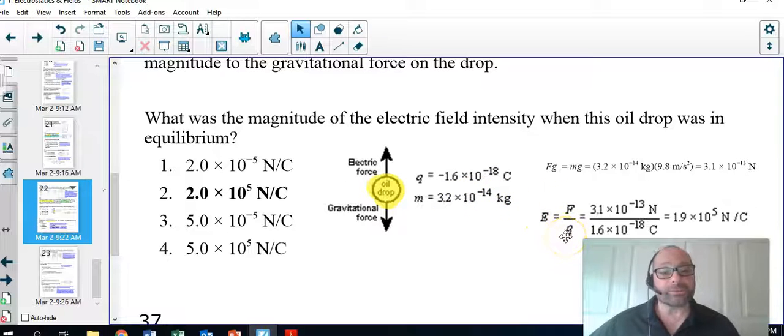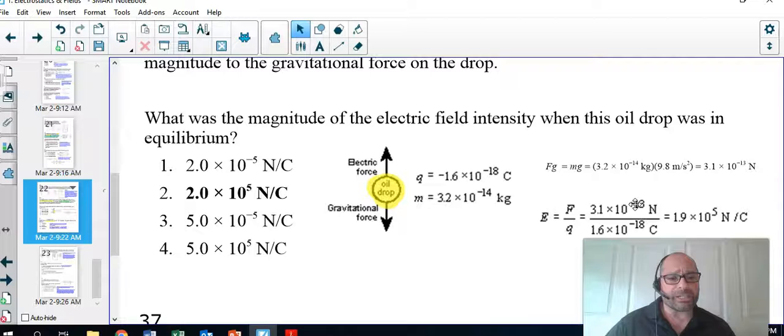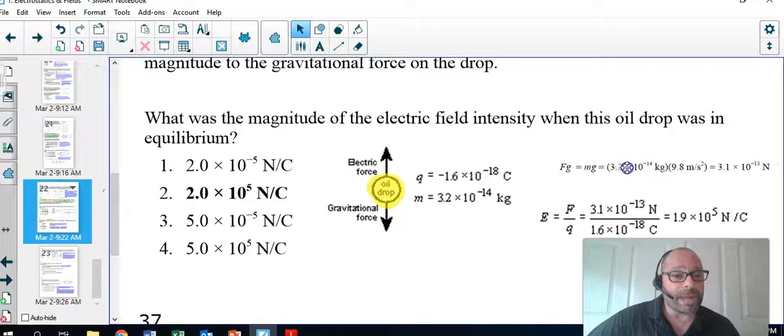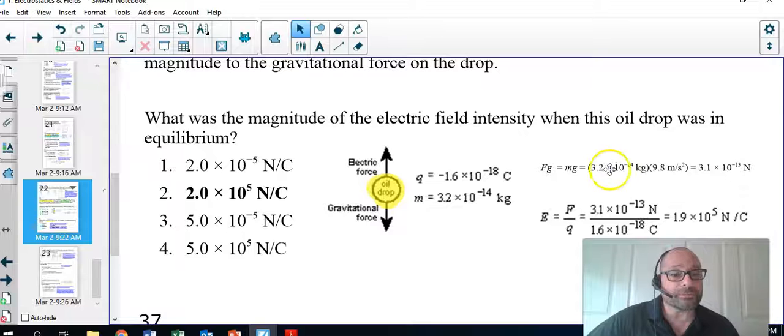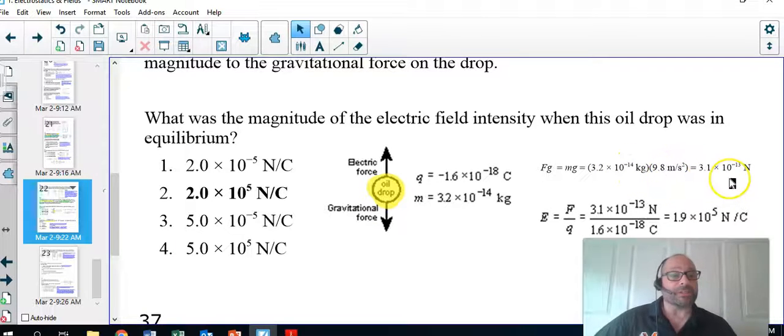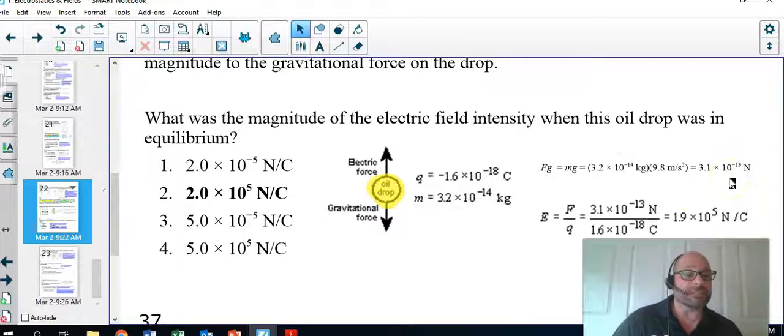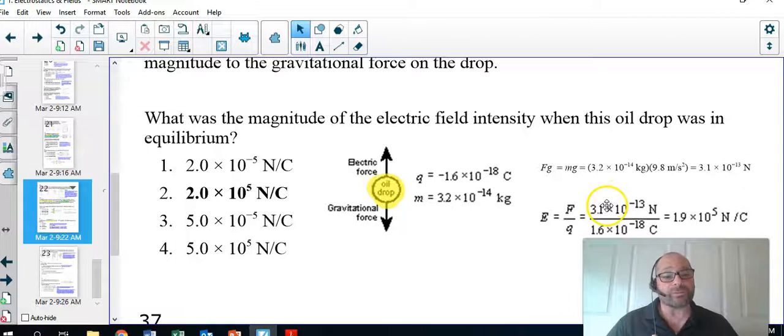1.6 times 10 to the negative 18 Coulombs. The mass was given as 3.2 times 10 to the negative 14 kilograms. E equals F divided by Q. So the F, right, that's the force acting on this charge, which is 3.1 times 10 to the negative 13 Newtons. And you say, well, where did I get that number from? It wasn't given in the problem. So here it is: here's the mass of the charged oil droplet. Multiply that by gravity, and that's where your 3.1 times 10 to the negative 13 Newtons comes from, and that goes right here for force. Q is given.